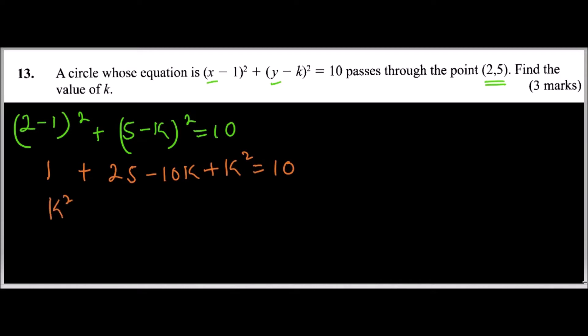Now we can start with k², followed by minus 10k. Now 1 plus 25 is 26, so we say plus 26. We bring 10 to this other side, it will be minus 10, and that will be equals to 0. So once you do that, we have k² - 10k + 16 = 0.